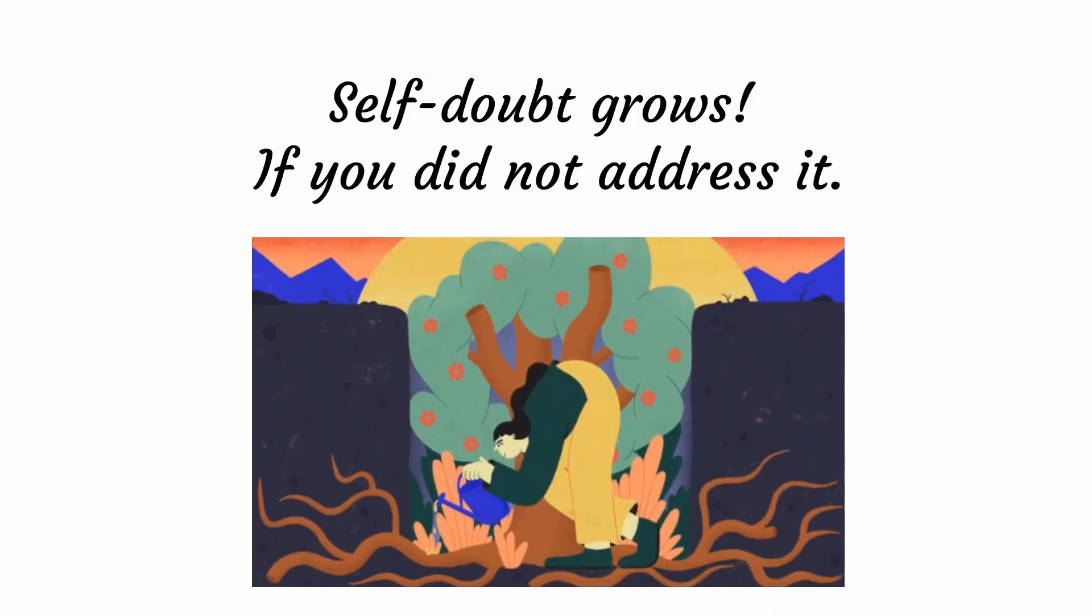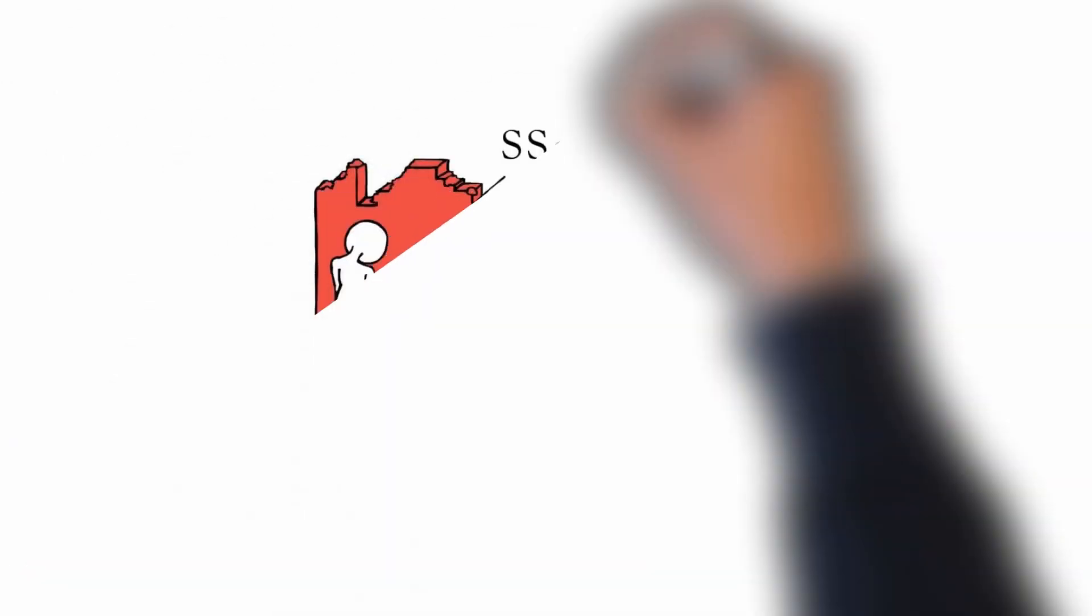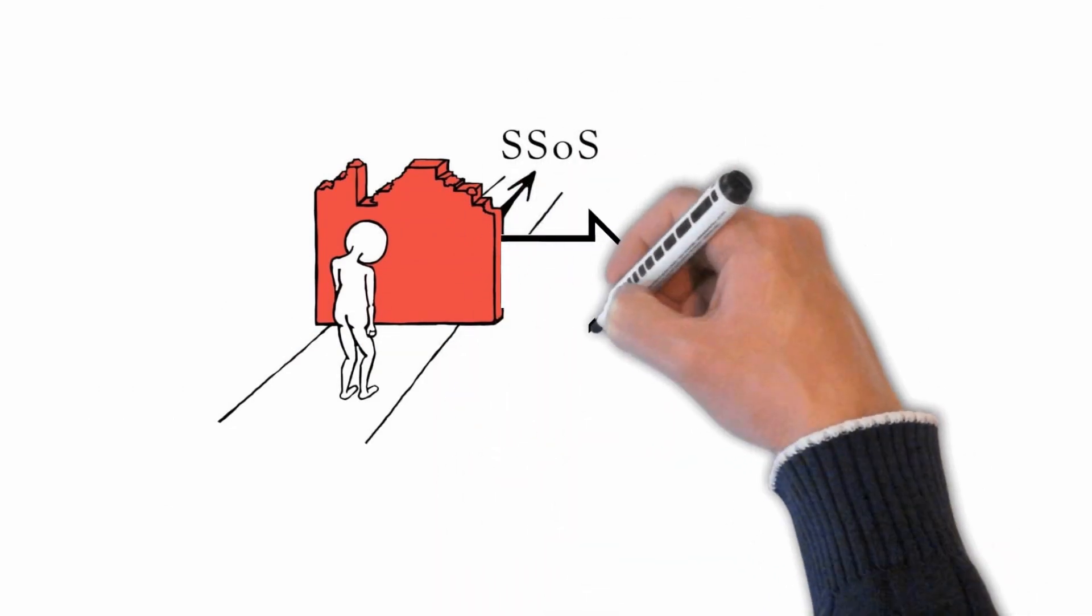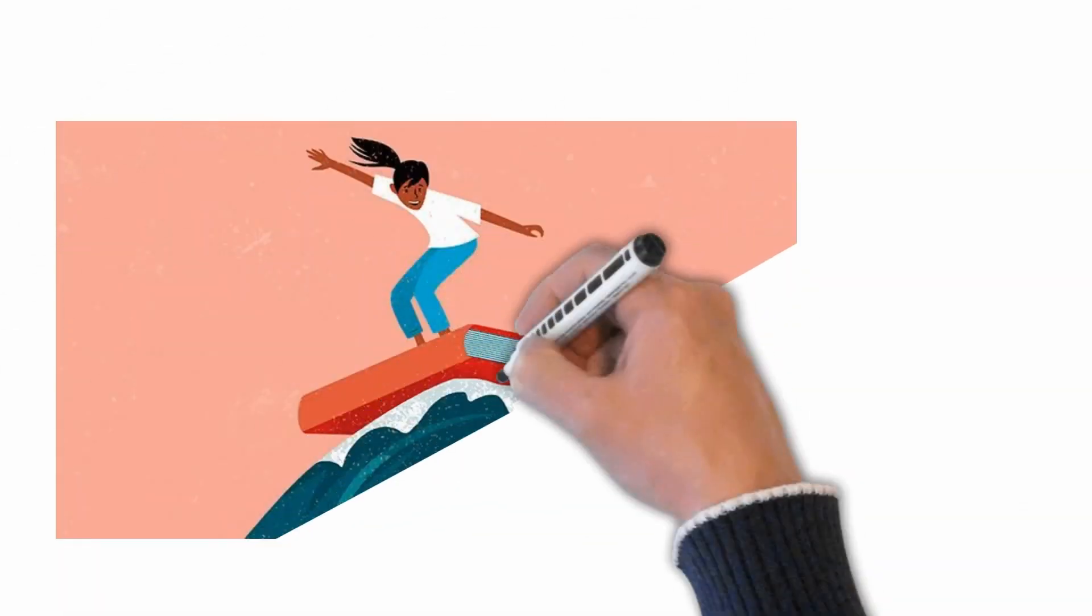As we discussed in the first series, we are all endowed with resilience. You can get rid of your self-doubt and replace it with confidence and optimism.